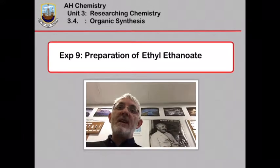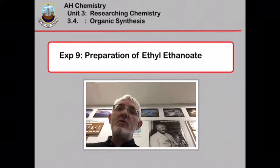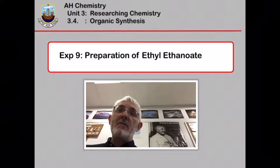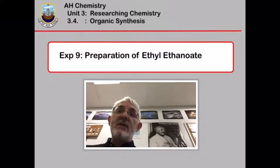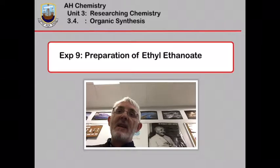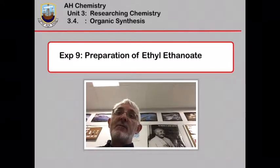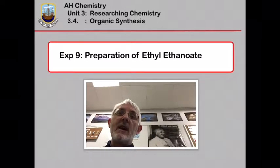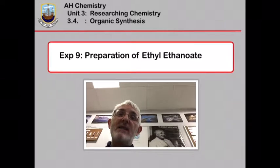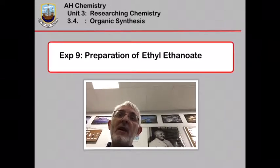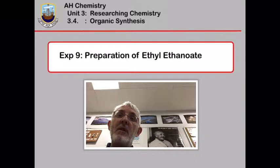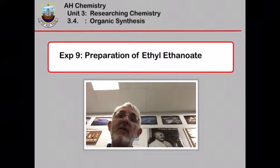In this experiment, we're going to make the ester ethyl ethanoate. Making the ester, as usual, is very easy. We just add some ethanol to ethanoic acid with some quantity of sulfuric acid and reflux it for a few minutes. The clever bit, as always, is then separating out your desired product from all the undesired products and unused reactants. And we'll do that by distillation, then purify our product by a mixture of solvent extraction and further distillation.